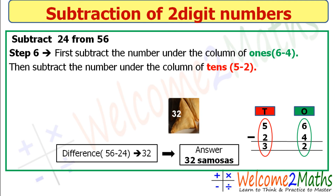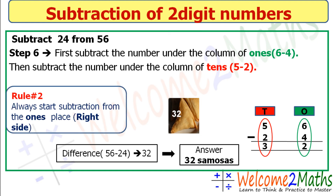The answer is 32 samosas left for the picnic. Rule number two: always start subtraction from the ones place, that is from the right side — just as we did today, and also in addition. Always start subtraction and addition from the ones place, from the right side.